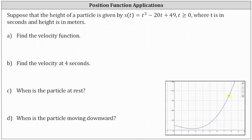Part a, we're asked to find the velocity function. The velocity function is equal to the derivative of the position function. So we say v of t is equal to s prime of t, which is equal to the derivative of t cubed minus 20t plus 49 with respect to t, which is three t squared minus 20.